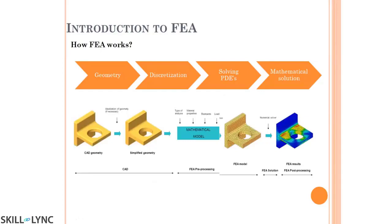Initially we have a geometry, which is a physical representation of our problem. We simplify this geometry by removing insignificant chamfers and radius fillets, and we convert it into a mathematical problem. In this mathematical problem, the geometry is split into a larger number of segments called elements — going from infinite to finite. In the real world we have millions of atoms and molecules, but we use a finite number of elements instead.